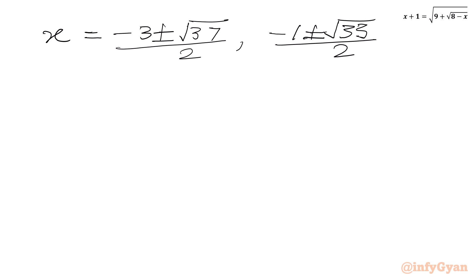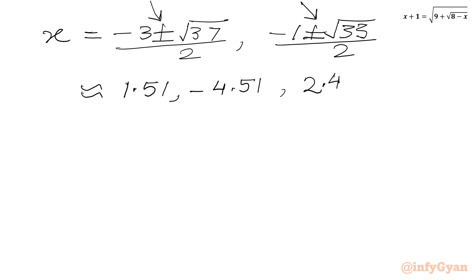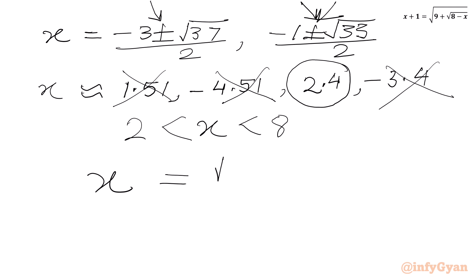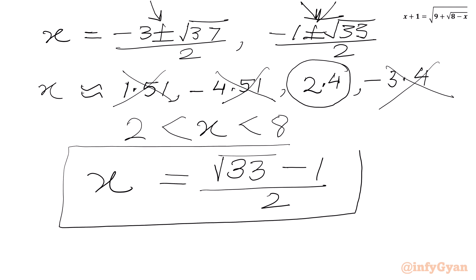Let's check the decimal values. For x = (−3+√37)/2 ≈ 1.54, for x = (−3−√37)/2 ≈ −4.54, for x = (−1+√33)/2 ≈ 2.37, and for x = (−1−√33)/2 ≈ −3.37. Only x = (−1+√33)/2 ≈ 2.37 lies in the interval (2, 8), so the unique real solution is x equals (√33 − 1) / 2.